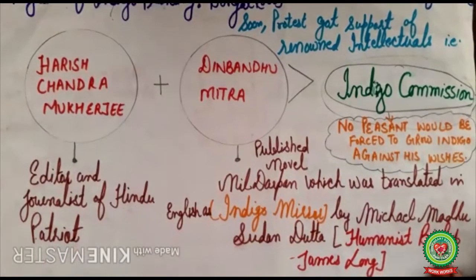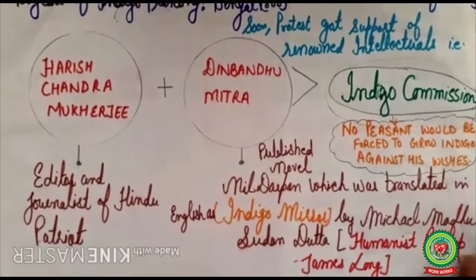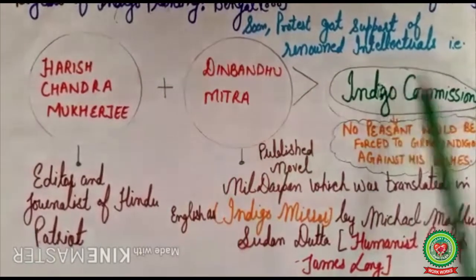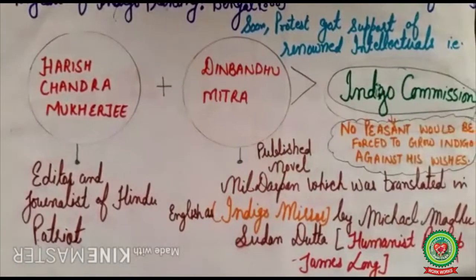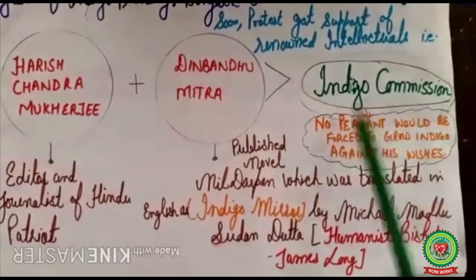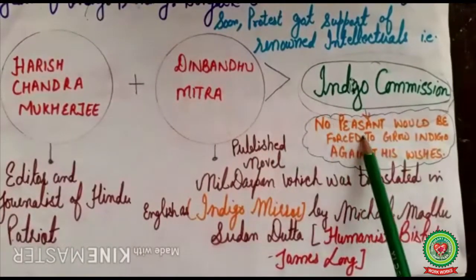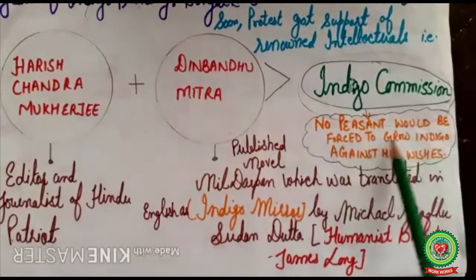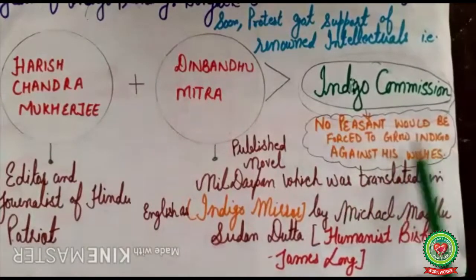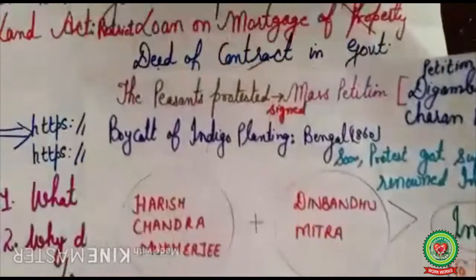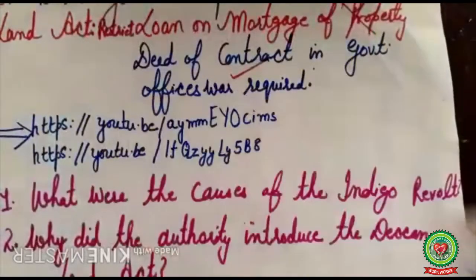Under the pressure of the peasants and the intellectuals, the British government set up the Indigo Commission in India. According to its findings, it was declared that no peasant would be forced to grow indigo against his wishes.